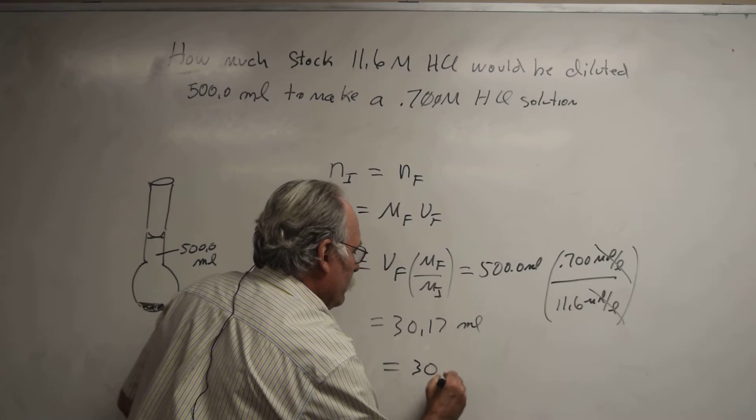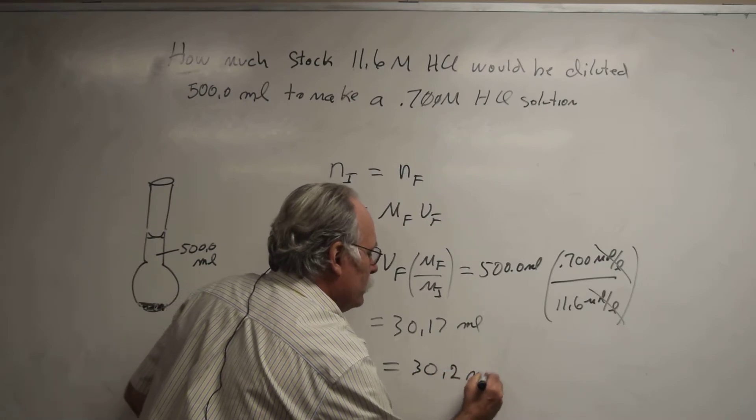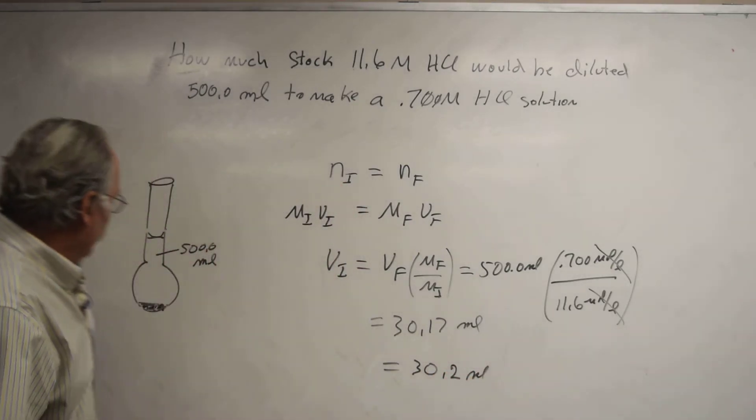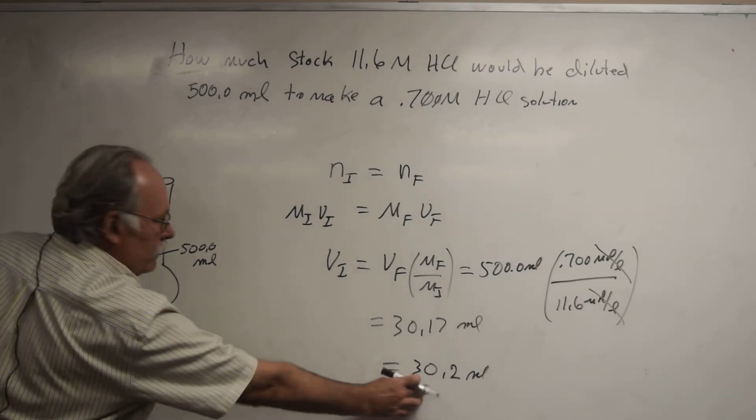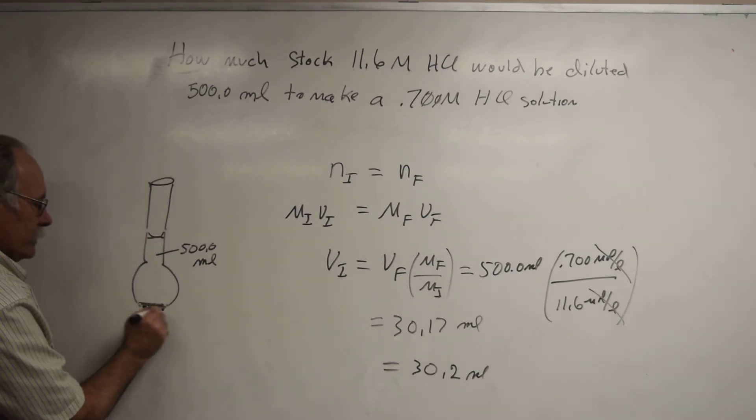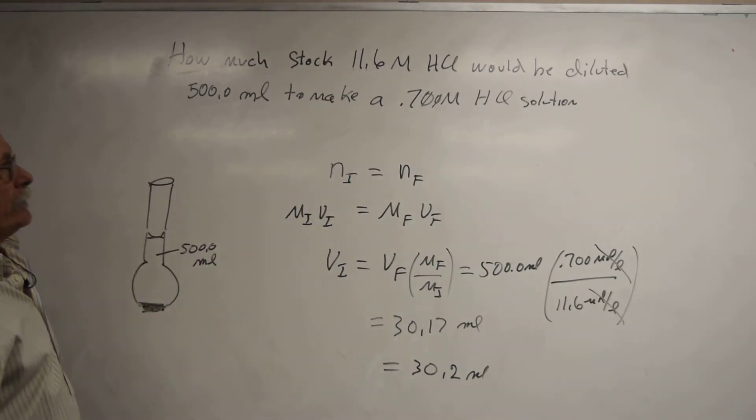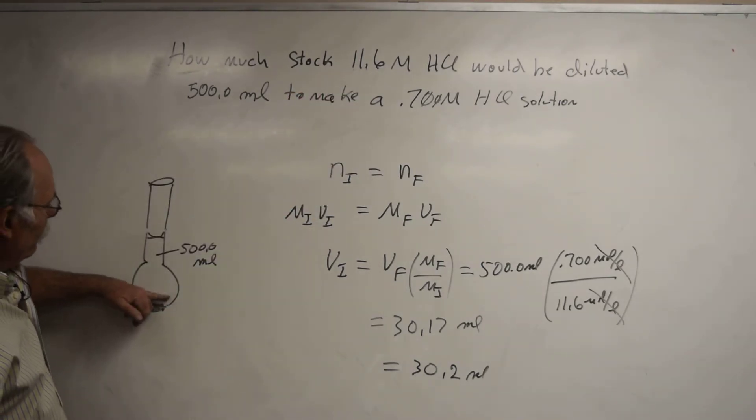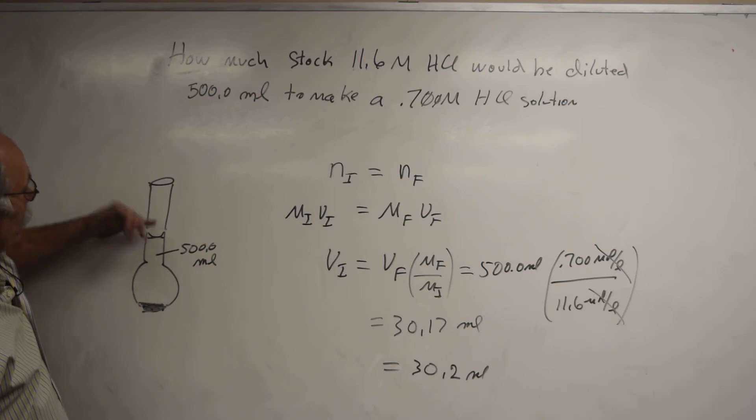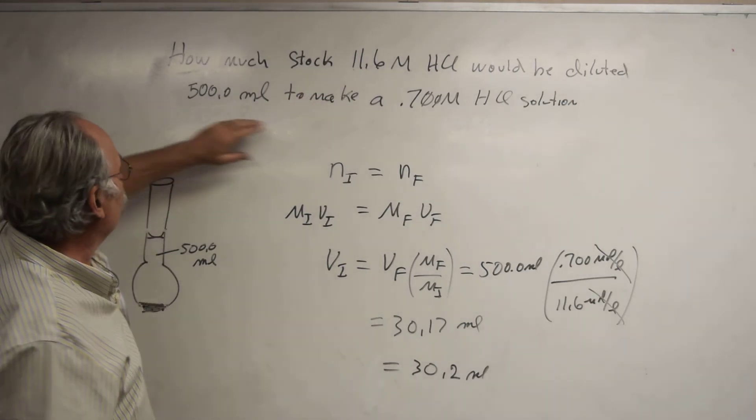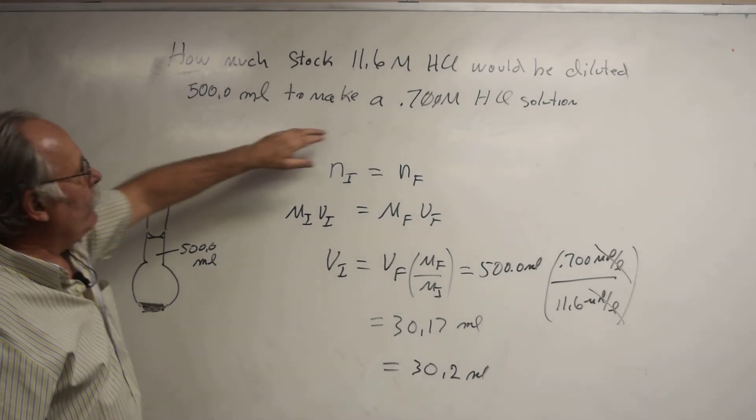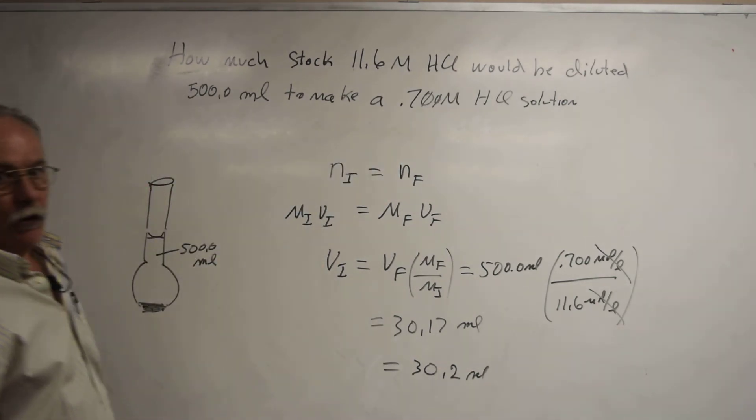So in summary, if I take 30.2 milliliters, put it into this container, at the bottom it will have a concentration of 11.6 moles per liter. Then if I add water and keep adding water until I have 500 mL, I've diluted this concentrated solution, and now it has a concentration of 0.7 molar.